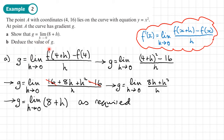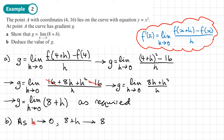And then part B asks us to deduce the value of G. Well, we're looking at what happens as H tends to zero. As this tends to zero, you have 8 plus a tiny, tiny number. What does this tend towards? Basically, it's going to become 8 — as H gets really, really small, we can almost forget about it. So G equals 8. As H tends towards zero, 8 plus H tends towards 8. So there we are — we've deduced the value of G.